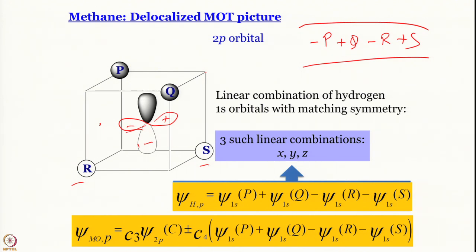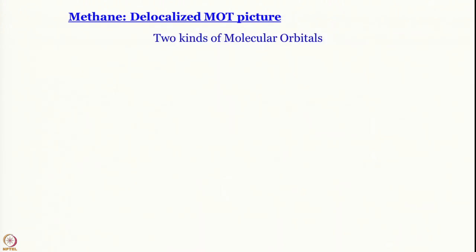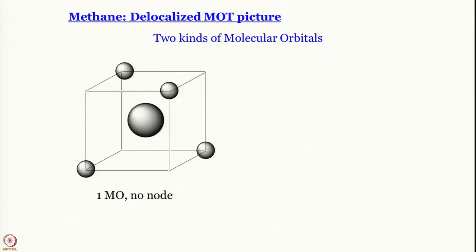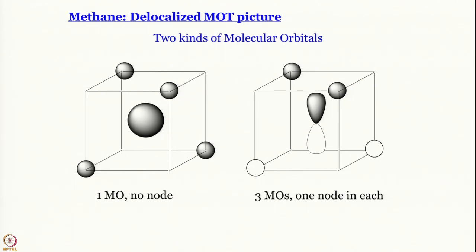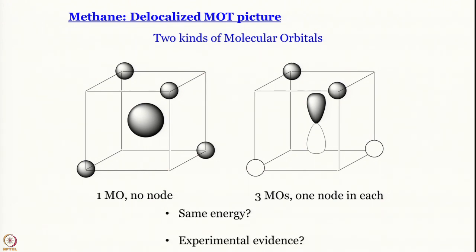We have 2 kinds of molecular orbitals — those arising from 2s and those involving 2px, 2py, 2pz — and they have different symmetries. This kind arising from p orbitals is three-fold: there are 3 MOs of the same symmetry. Will they have the same energy as the 2s-derived MO? No — because here there is no node and there is a node in the 2p combination. So we expect 2 groups of molecular orbitals — very different from what we expected from localized MOT.